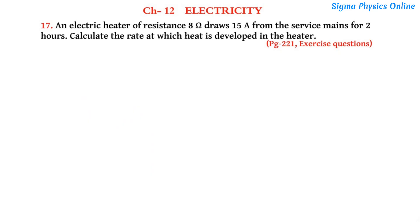Hello students, welcome back. Let's solve exercise question number 17 of Chapter 12 Electricity from Class 10 NCERT science textbook. The question reads: An electric heater of resistance 8 ohm draws 15 ampere from the service mains for 2 hours. Calculate the rate at which heat is developed in the heater.